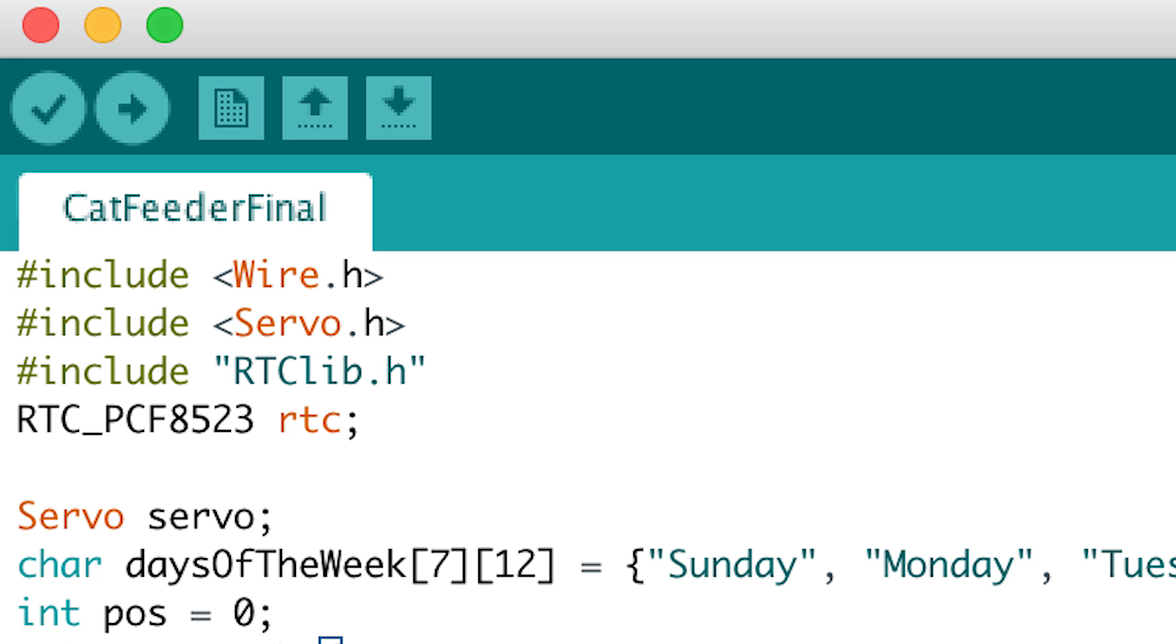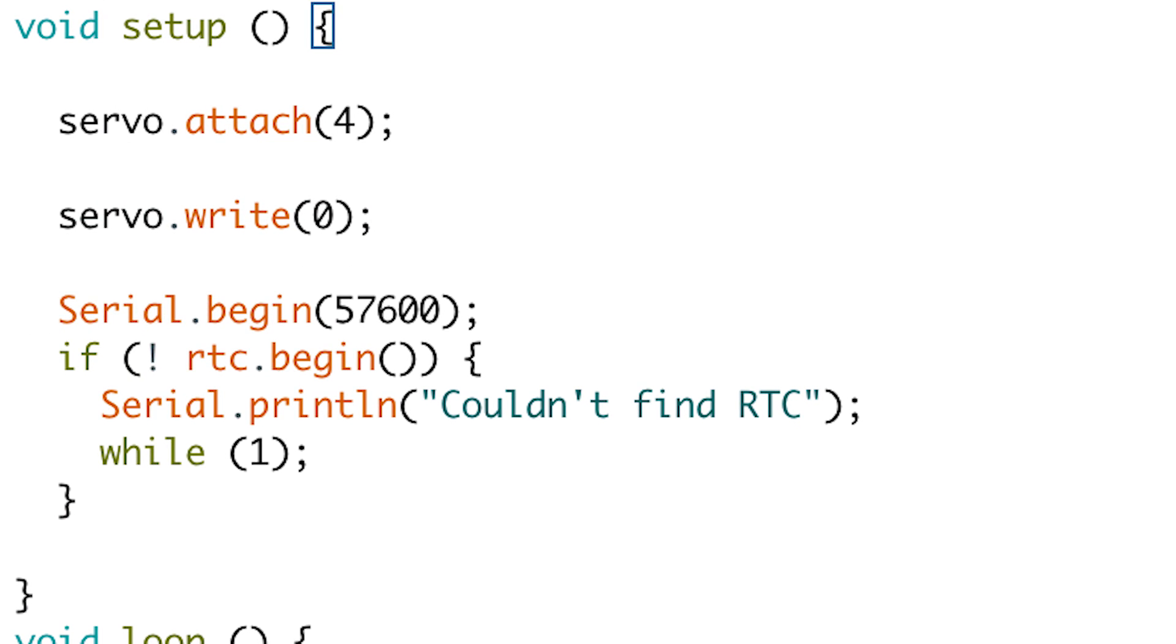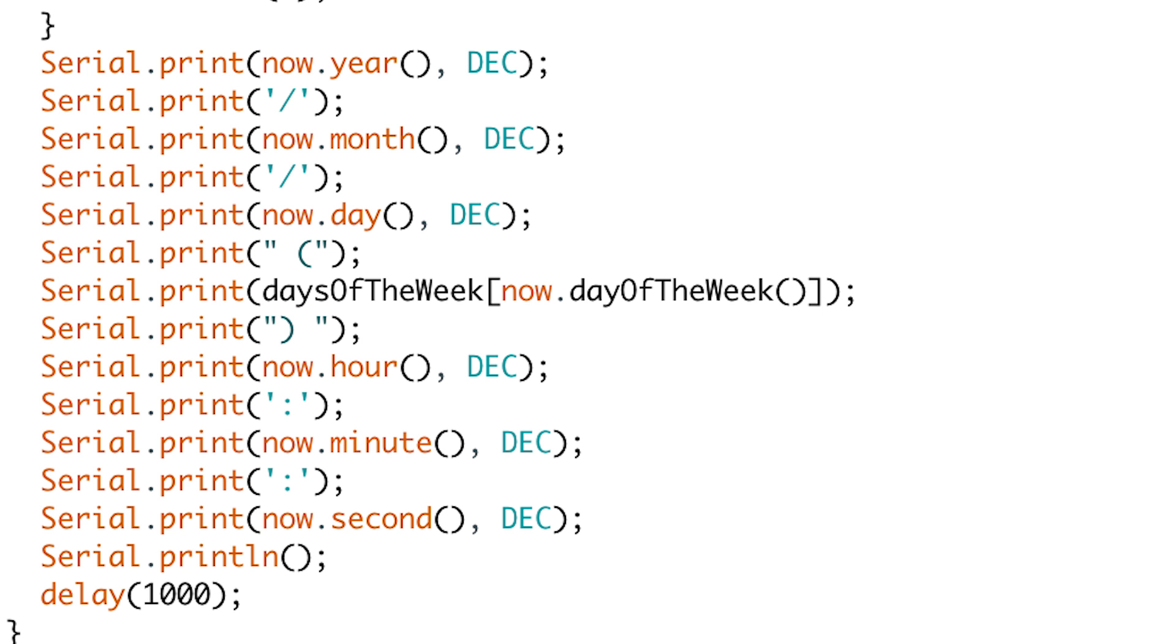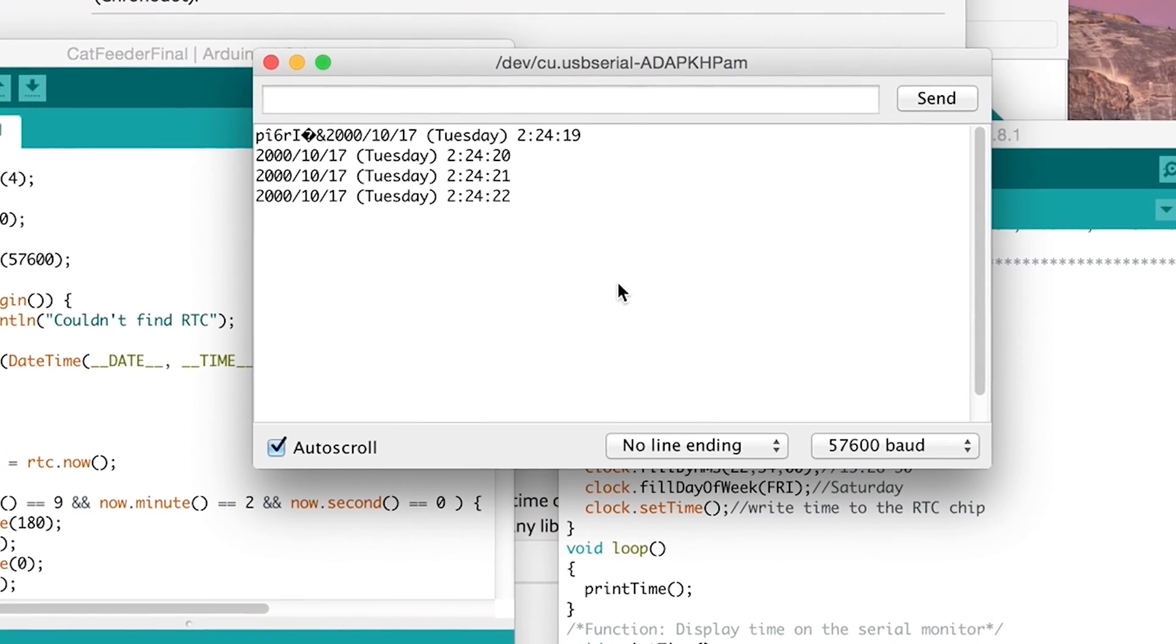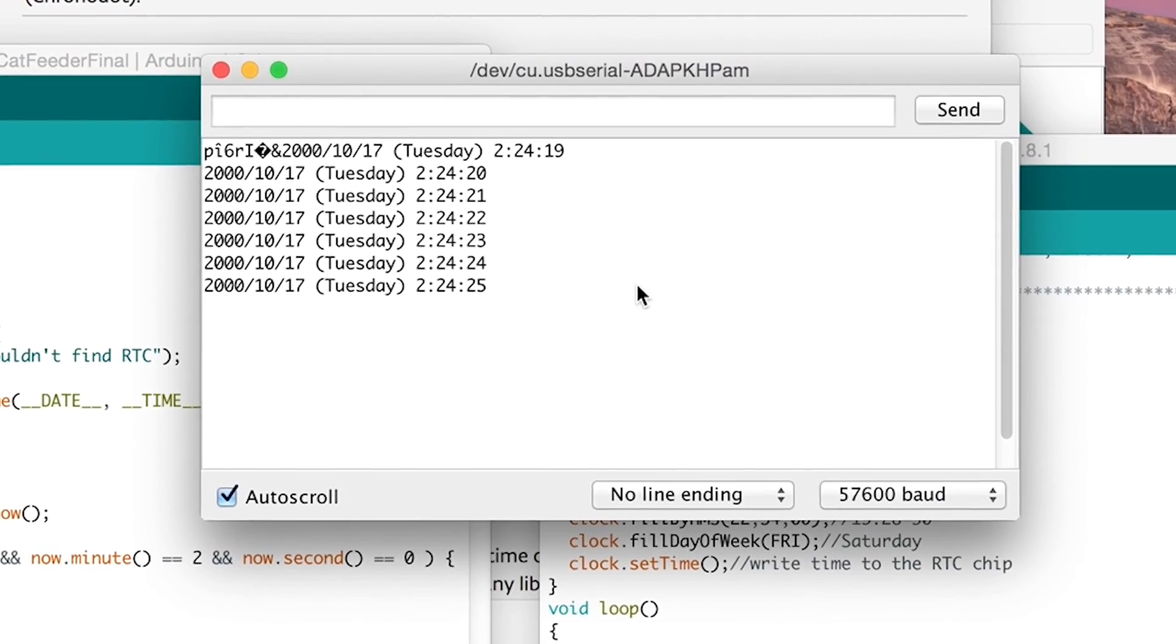First all of our components are defined. Then we move on to the setup. This is the portion of the code that runs once at the beginning. In my setup I'm basically telling the Arduino to display the time from the real time clock on the serial monitor. The serial monitor can be viewed on the computer while the Arduino is connected.